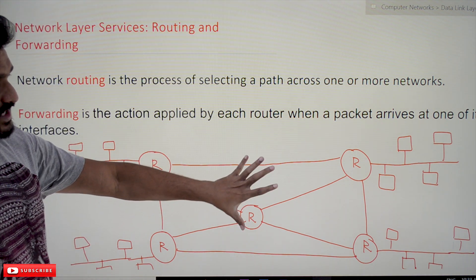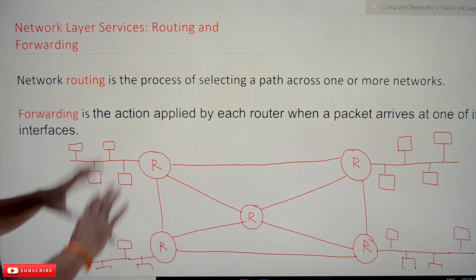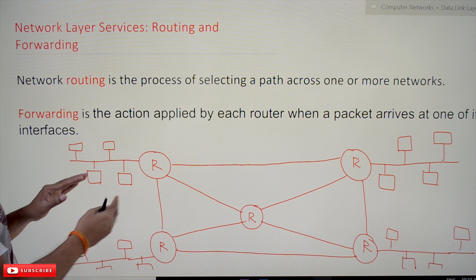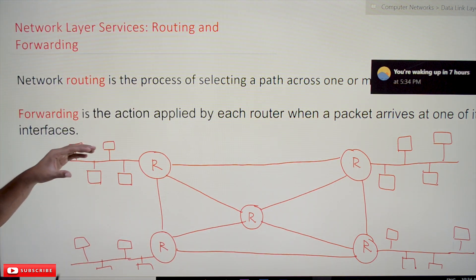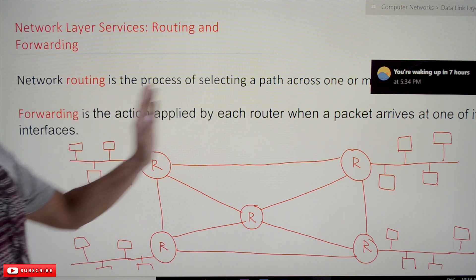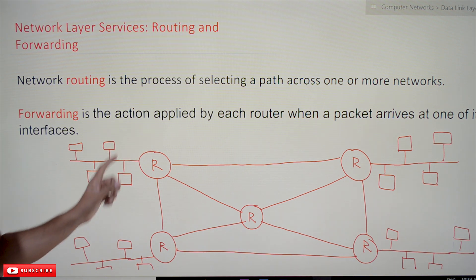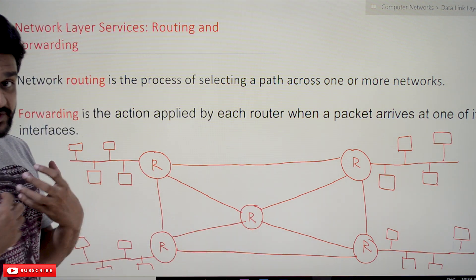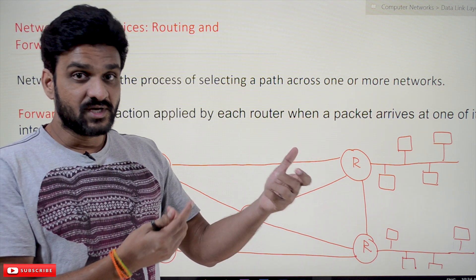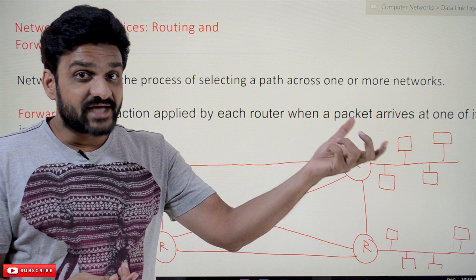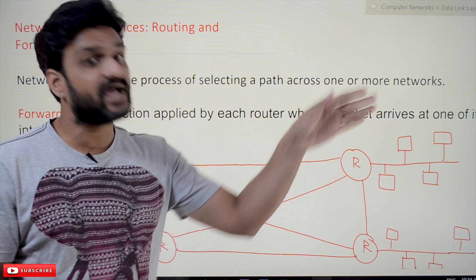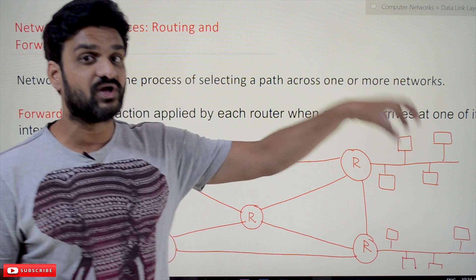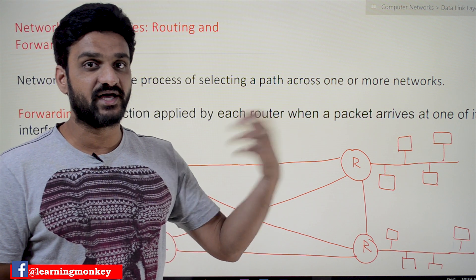Let's understand this using a diagram. Here we have multiple networks connected — this is one network, this is another network, and another network. All these networks are interconnected. Whenever we want to transfer data from one network to another, we have to select a path — the most efficient or smallest distance path. That process of selecting a path across one or more networks is what we call routing.